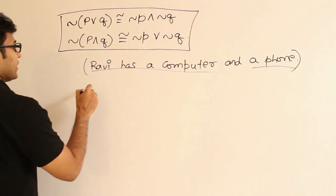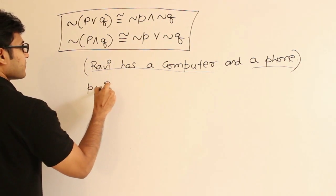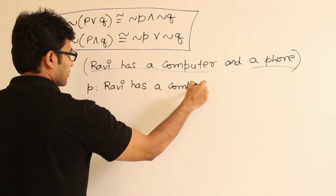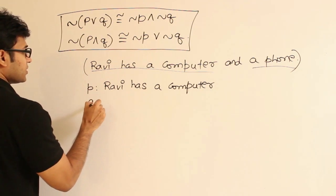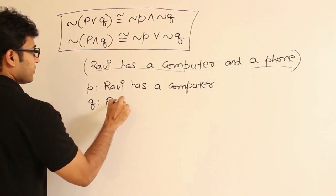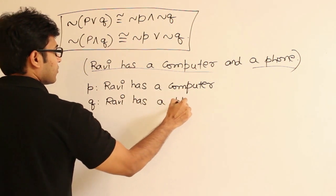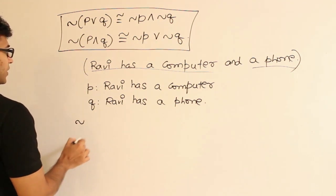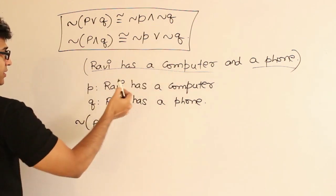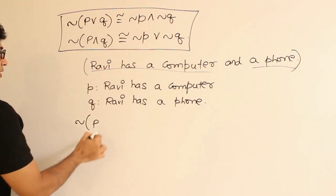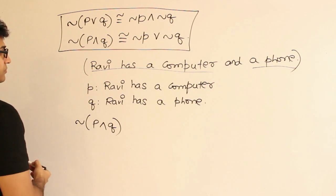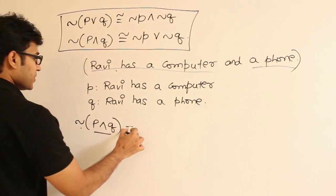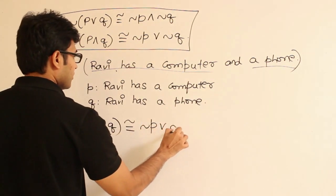Let P be the statement representing 'Ravi has a computer,' and Q be the statement representing 'Ravi has a phone.' Now, if you take the negation — you see, this entire thing is actually P and Q. Now, if I take this P and Q, the given compound statement, and apply the negation, it should be equivalent to negation P or negation Q.